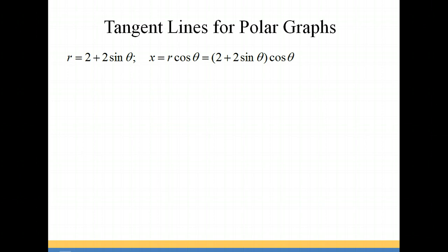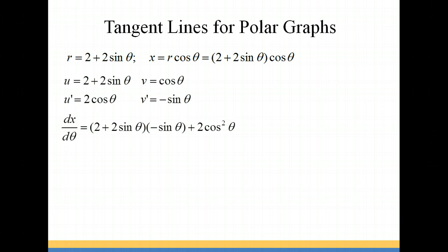We're going to do the same thing for x. x is equal to r cosine theta, which gives us 2 plus 2 sine theta times cosine theta. Because I have two different trigonometric identities, I'm going to use the product rule in order to differentiate. So I'm going to let u equal 2 plus 2 sine theta, and v equal the cosine of theta. u prime is going to give me 2 cosine theta, and v prime is negative sine theta. So dx/dθ is going to be equal to uv prime plus vu prime, which is 2 plus 2 sine theta times negative sine theta, plus 2 cosine squared theta.